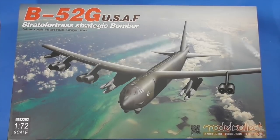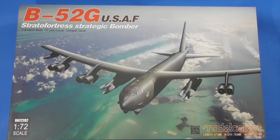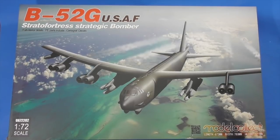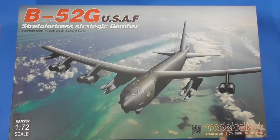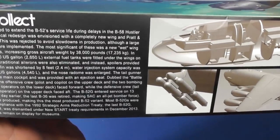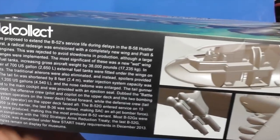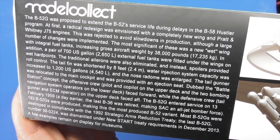Look what was waiting for me. Model Collect 1:72 B-52G Stratofortress, beautiful box art. 673mm length, 783mm width, 172mm high. A little bit about it if you want to pause it and read it.